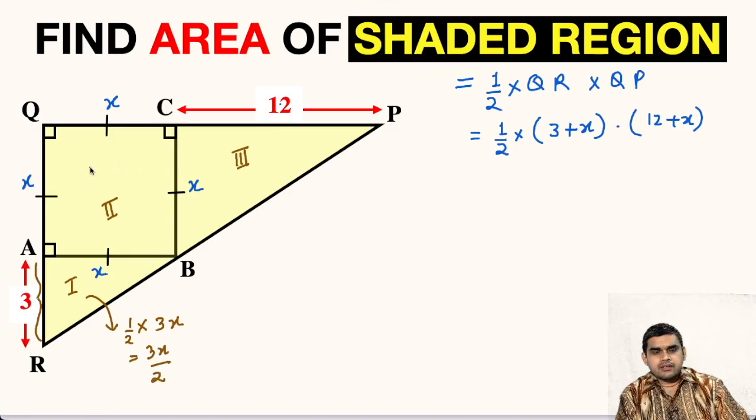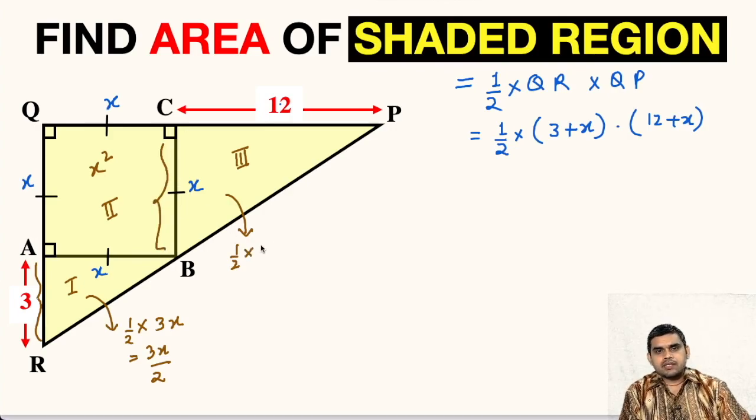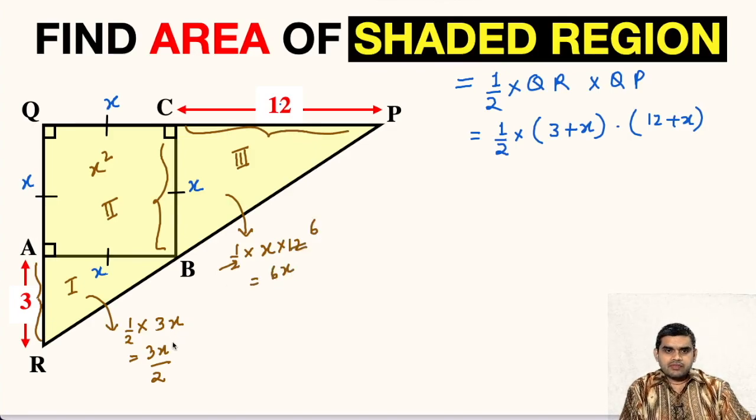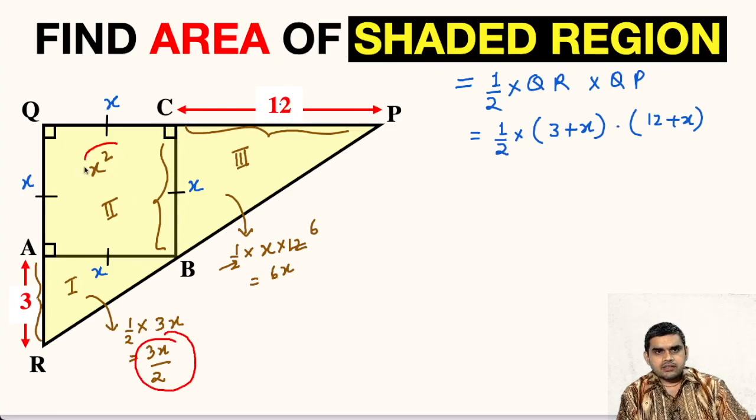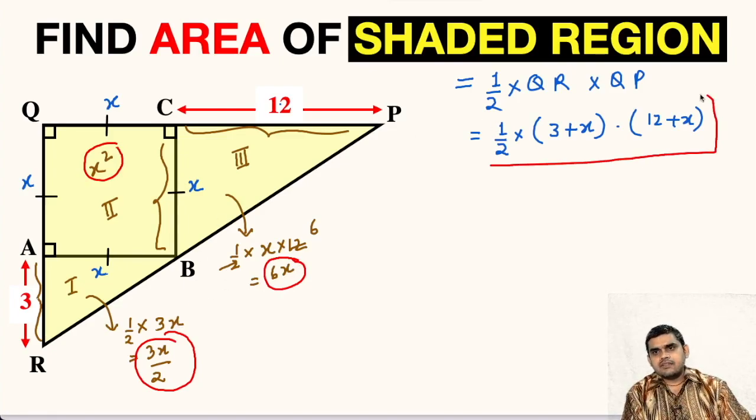Area of this square, the second figure, will be X square. Area of this third figure, that means this right triangle, will be half times, let us take DC as the base, so X times the altitude that is 12 here. We can cancel this by 6, so this will be 6X. Now, if we add these three areas - area of this first triangle, area of this square, and the area of this third triangle - we will get this area that we have already obtained.